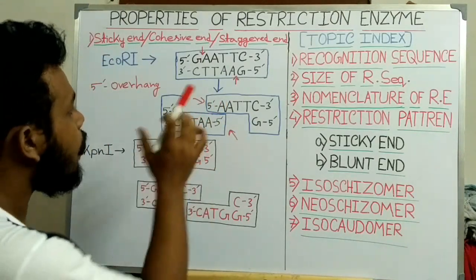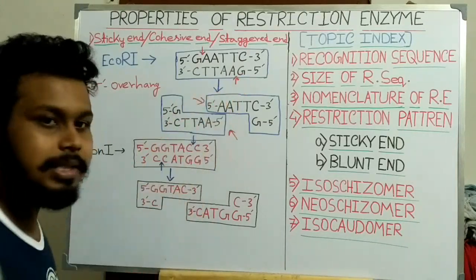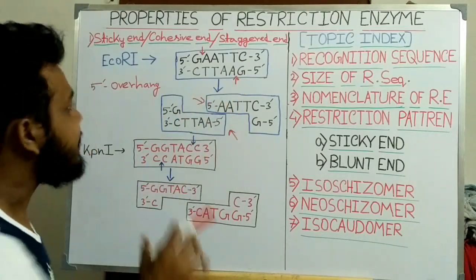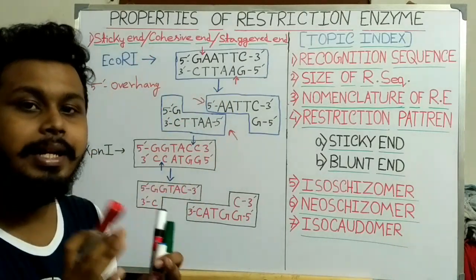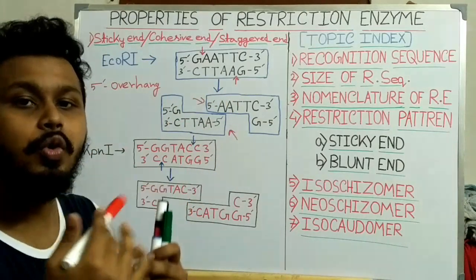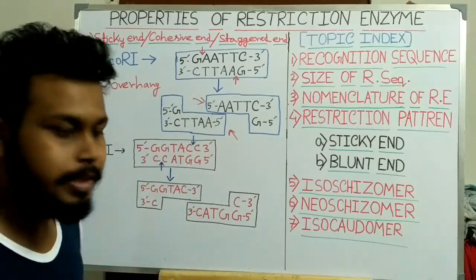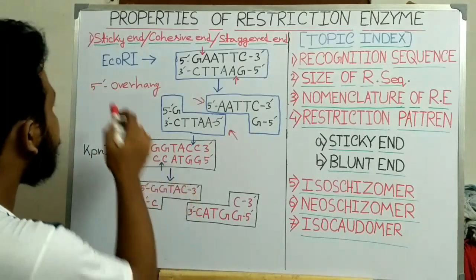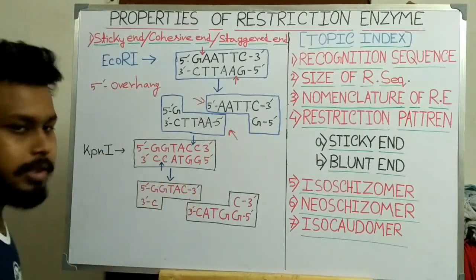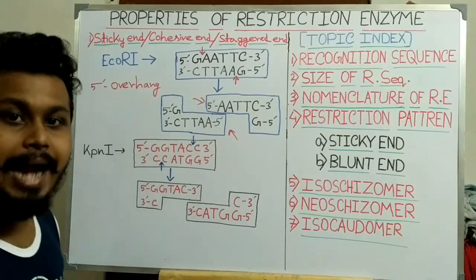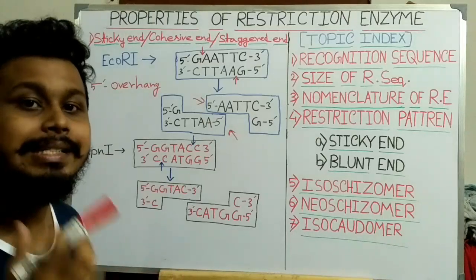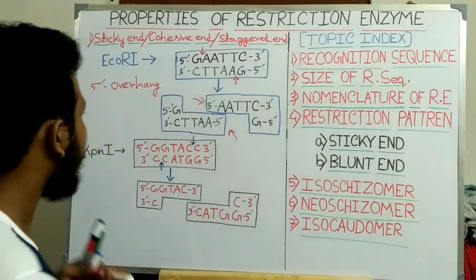Depending on the overhang structure, the sticky end can be divided into two types: the 5' overhang and the 3' overhang.